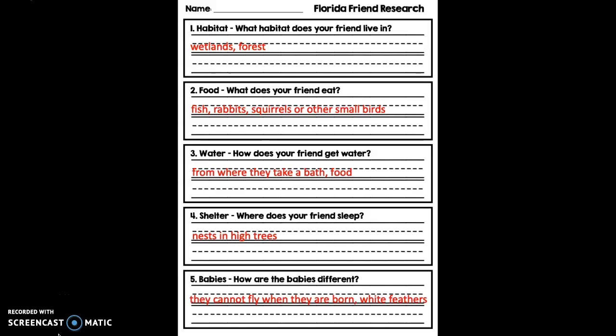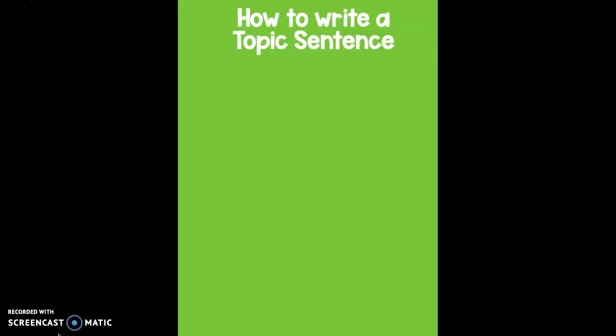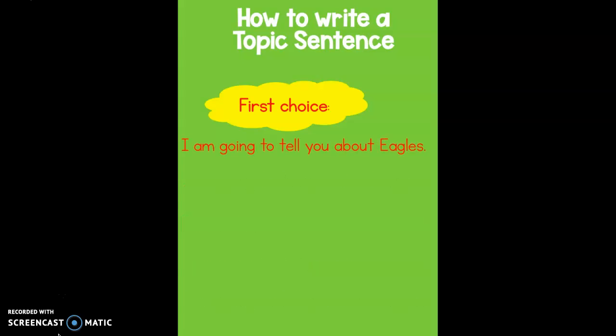I have my organizer in front of me and we did all the research together about Eagles. Now I want to show you how to write a topic sentence two different ways. The first choice is very basic and it just lets your reader know what you are going to be writing about. That's basically what a topic sentence is — it lets the reader of your paper know what it's going to be about, almost like a main topic in reading.